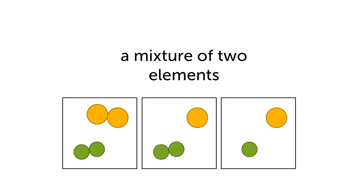Now we look at mixtures. Each box shows two different kinds of elements. On the left, we have one yellow and one green element. They are not joined to each other, but within themselves they are bonded. So this is element A and this is element B — two types of elements mixed together in the same space.